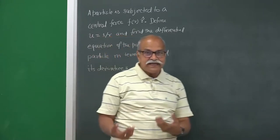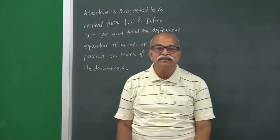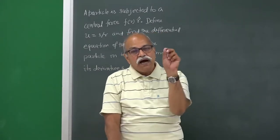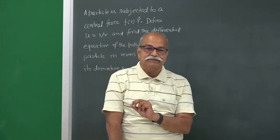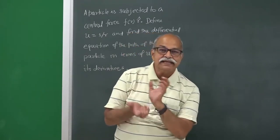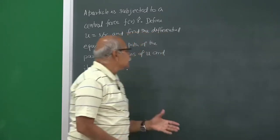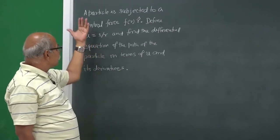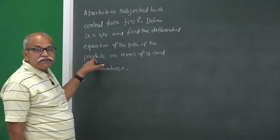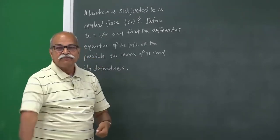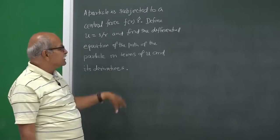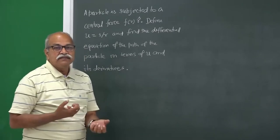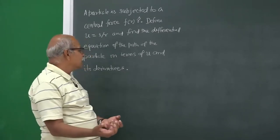We had obtained the path of the particle, especially for the attractive inverse square force, and that was r as a function of theta. When you give the relation between the coordinates you get the path. Here you are asked to work not in r, but in u which is 1/r, and find the differential equation of the path — meaning u as a function of theta — but what we need is the differential equation in terms of u, du/dθ, d²u/dθ², and so on.